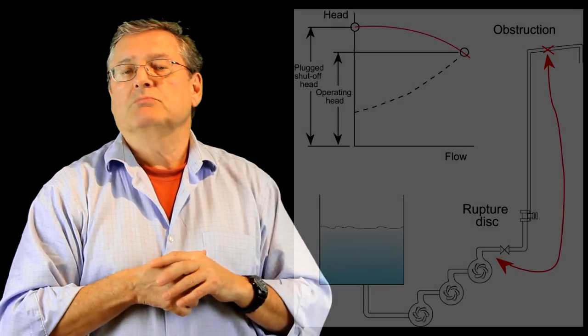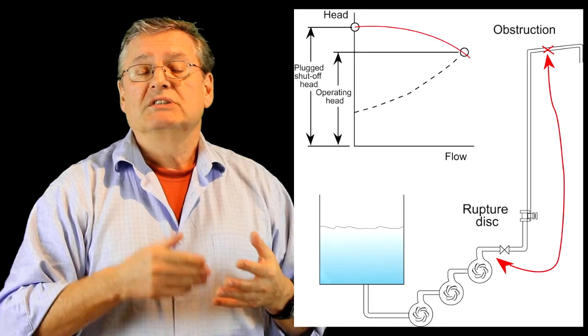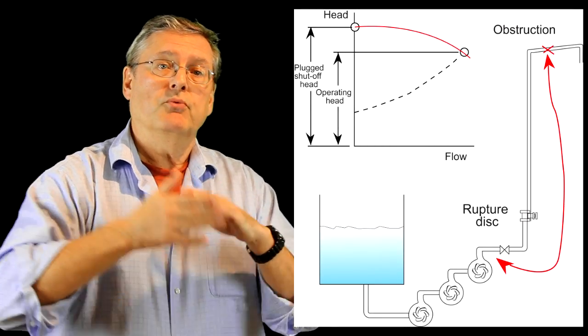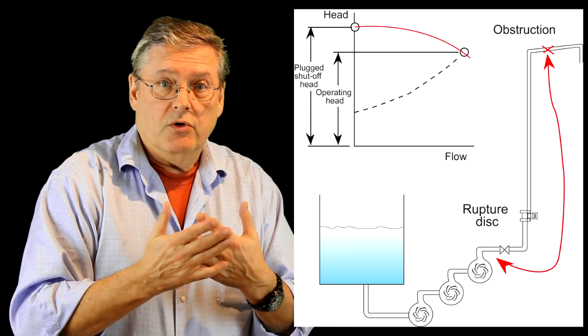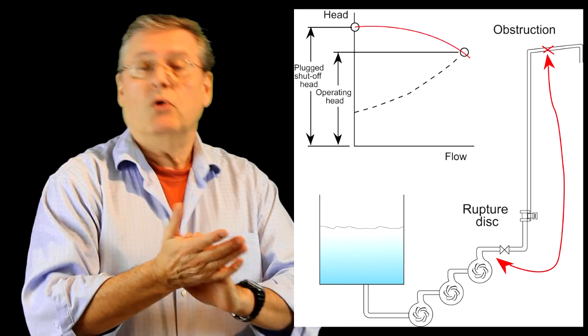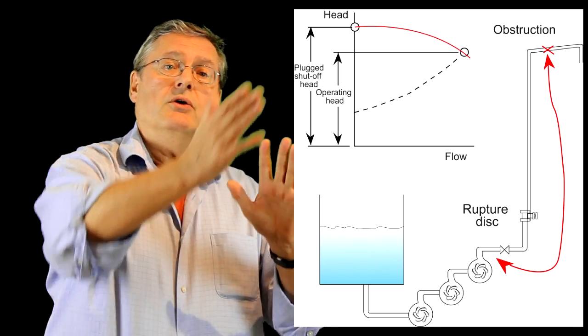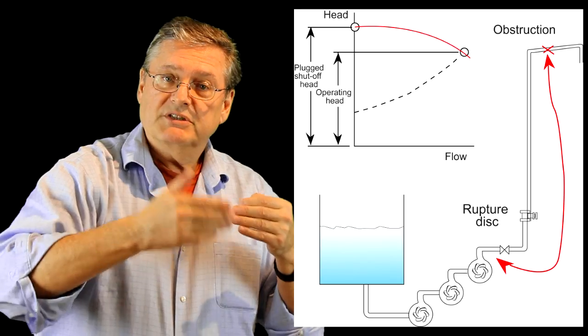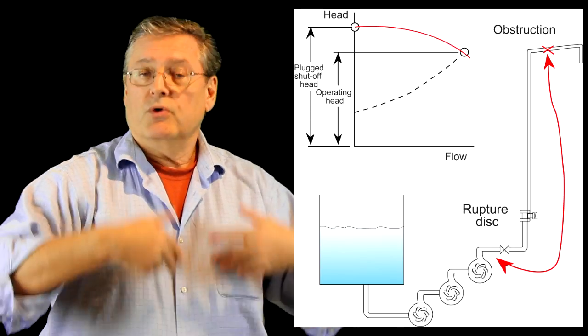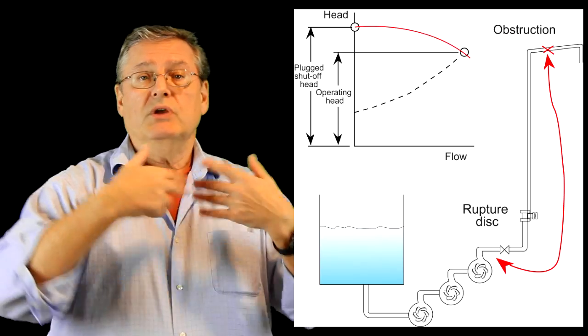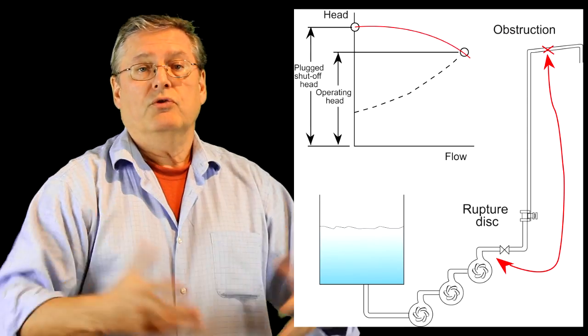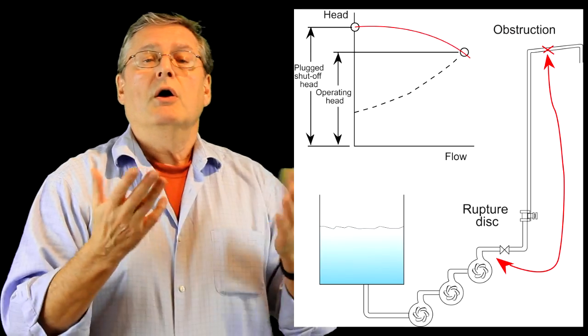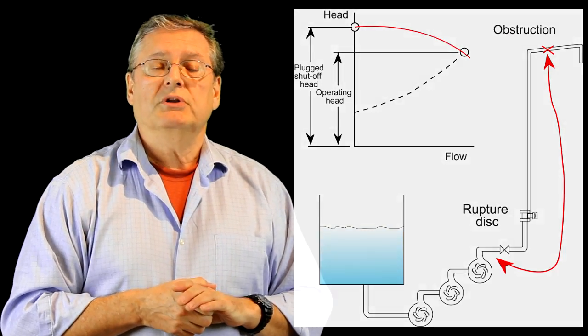In cases such as mining where we have several stages, if there's an obstruction in the line the pump will have no flow or zero flow. When there's no flow in the centrifugal pump, the head goes up and the pressure goes up. If you have several pumps in series that's cumulative, so three pumps means the pressure will go three times as high and you could damage the equipment. It's common practice to put in a rupture disc.